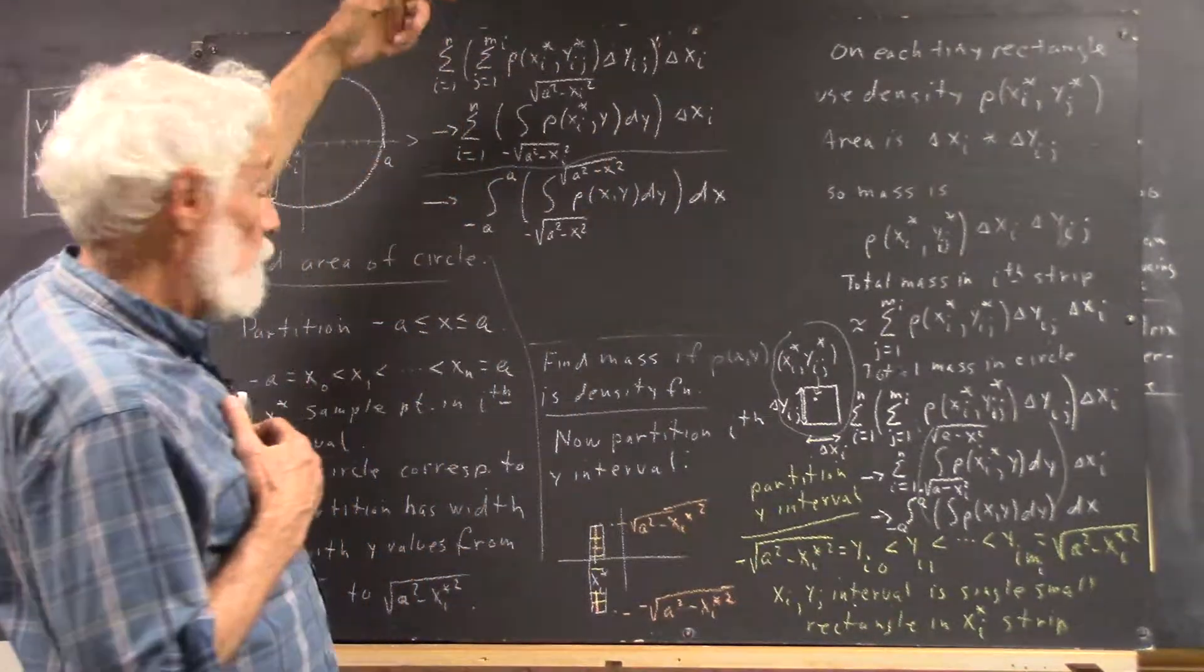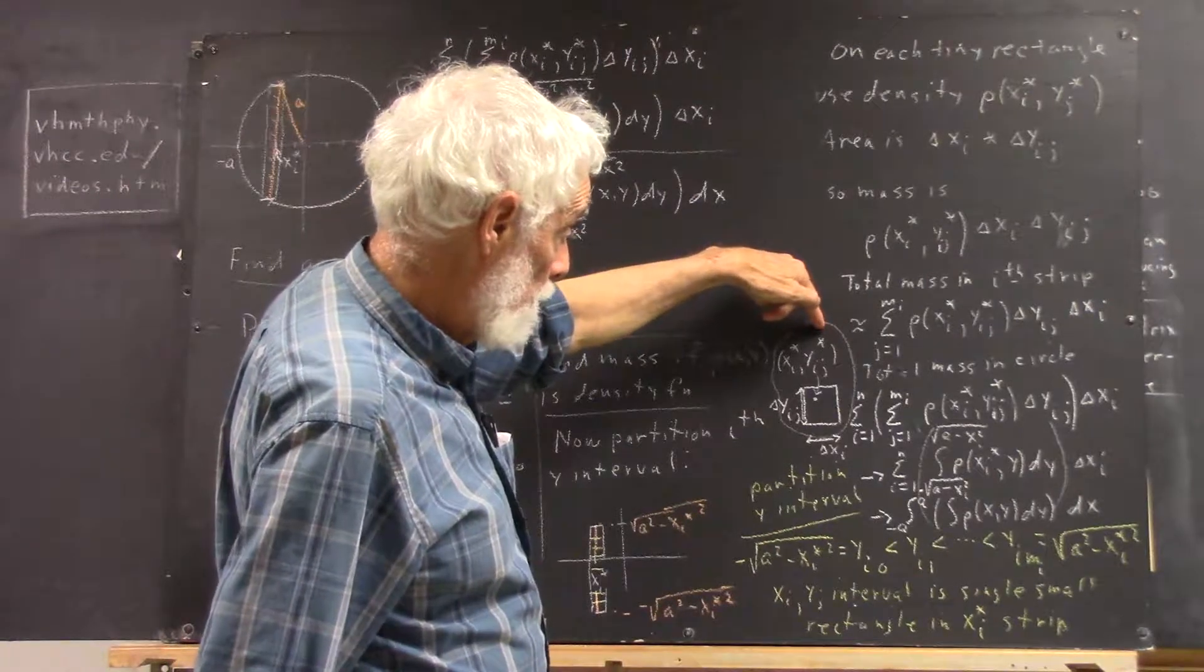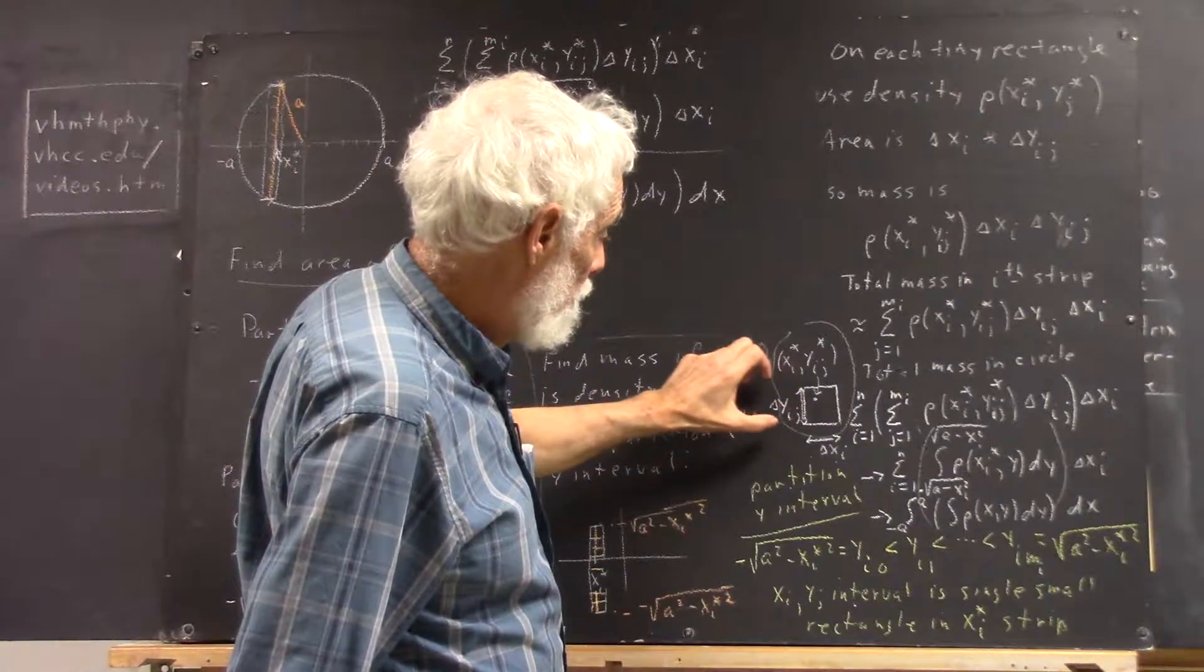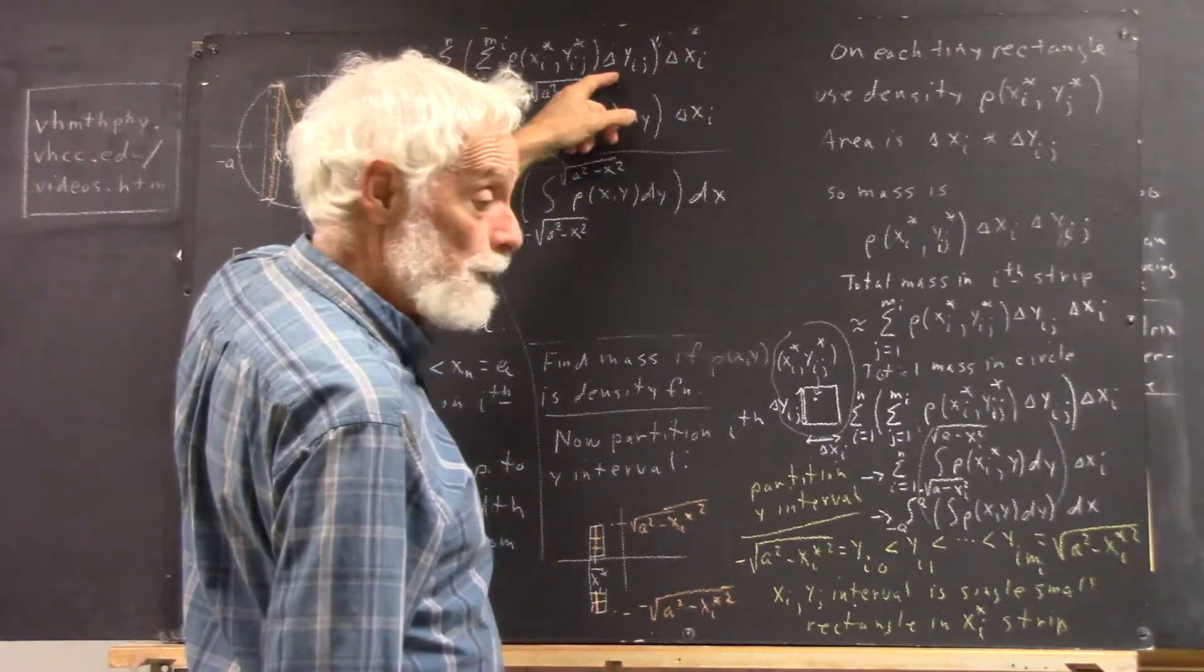Okay, and within each interval, we're going to have a sample point xi star, yij star, width delta xi, height delta yij. So the area is delta xi times delta yij.